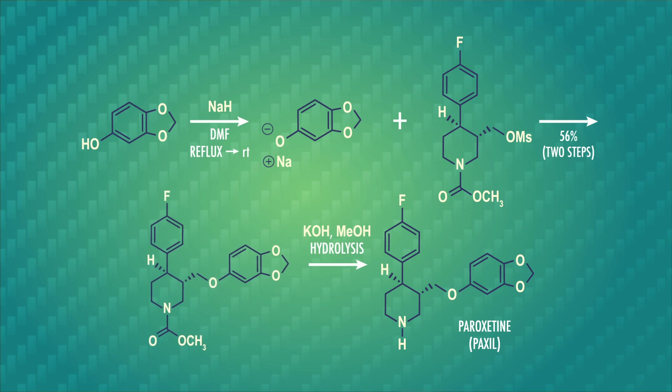Unfortunately, those reactions aren't super efficient, and the ether is only 56% of our products. So before we move on to the last step to make paxil, we'll need to separate the ether we want from the side products that we don't. This is where chromatography comes in.